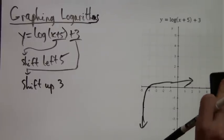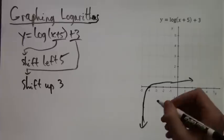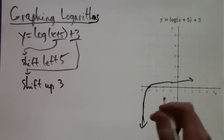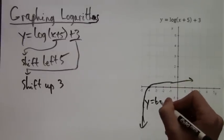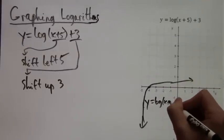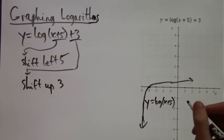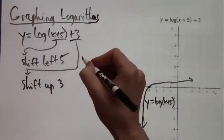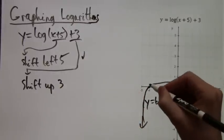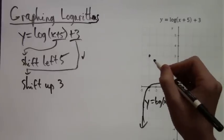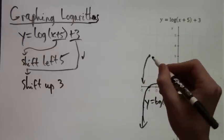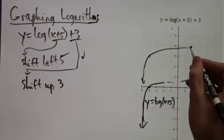Instead of the y-axis, it gets really close to y equals negative 5. That's what shifted left by five looks like. Now all we have to do is shift it up three. We have this one important pivot point which was originally the point (1,0) but now is shifted to the left by five, and now we're going to shift that point up by three.